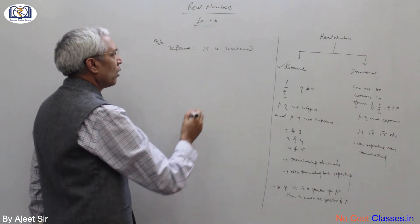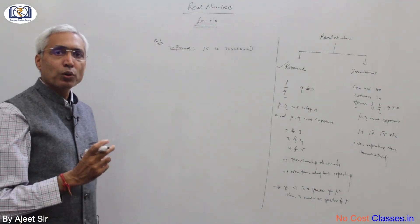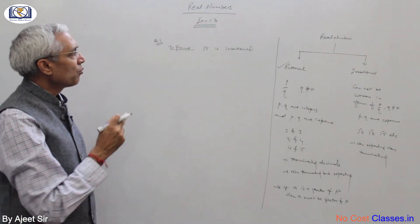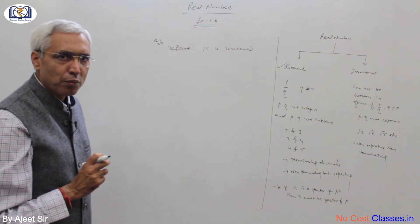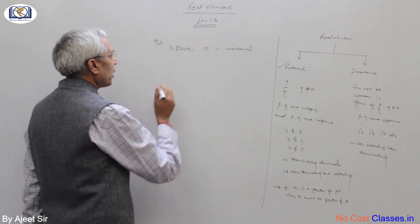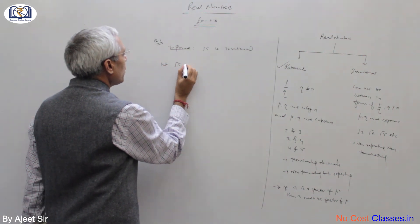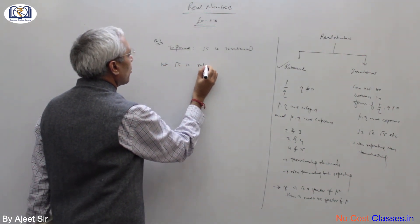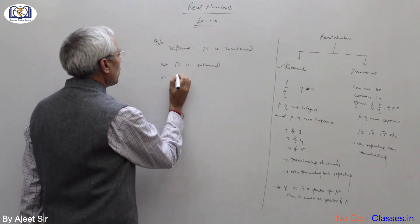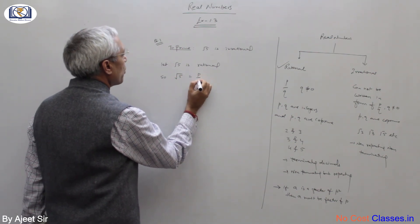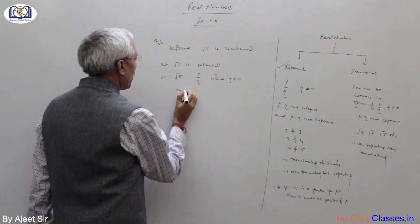Where we assume root 5 to be rational and start working from there. So we can write root 5 in the form of p upon q, where q is not equal to 0 and p and q are co-prime.